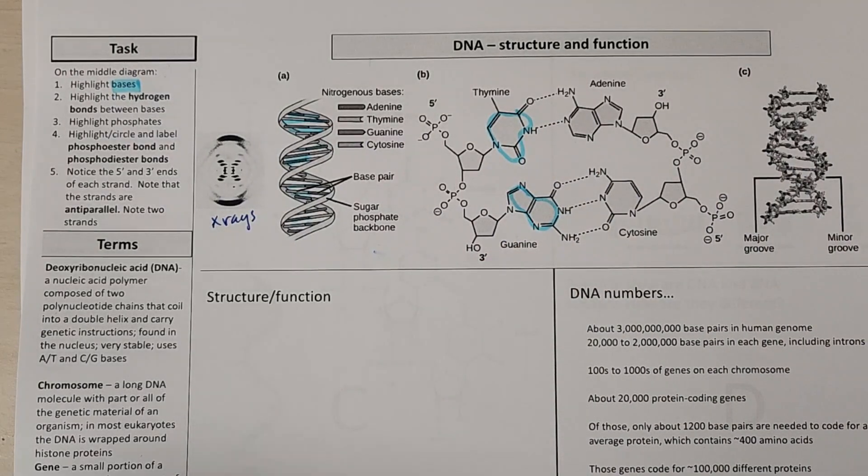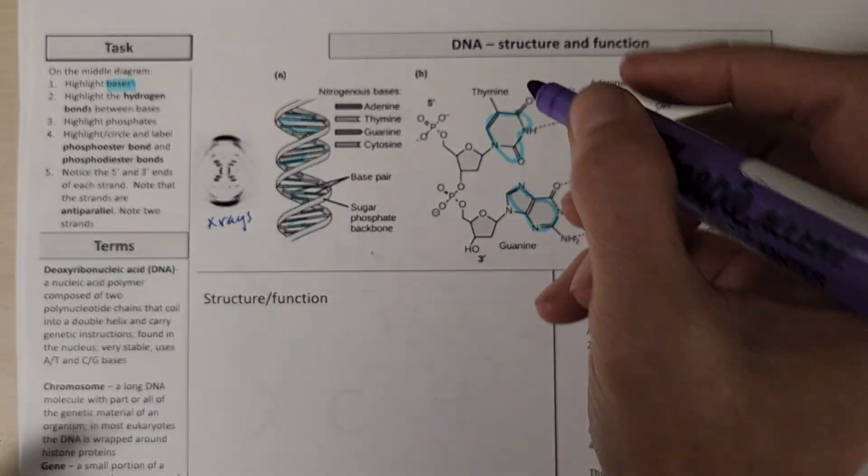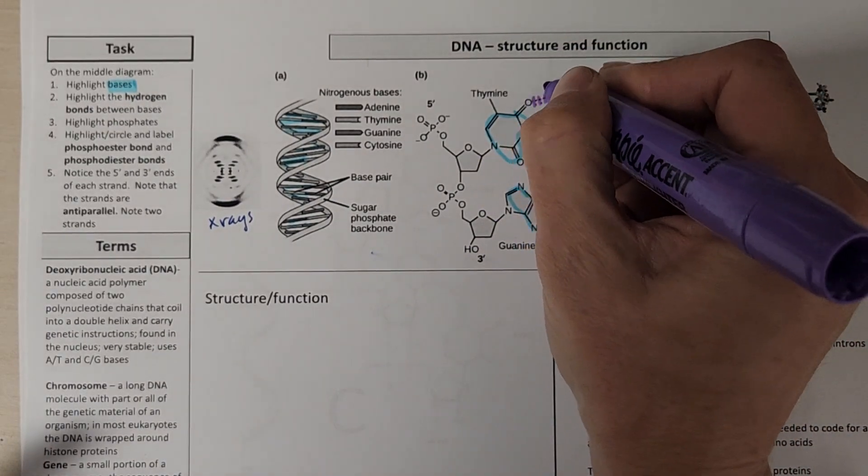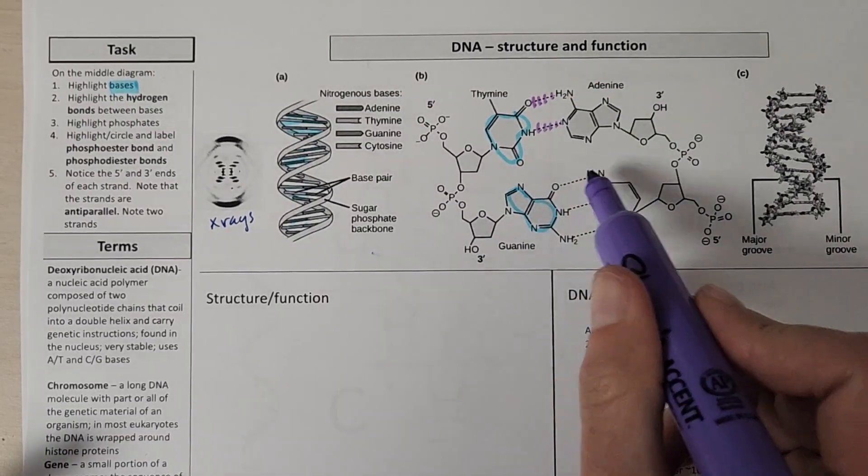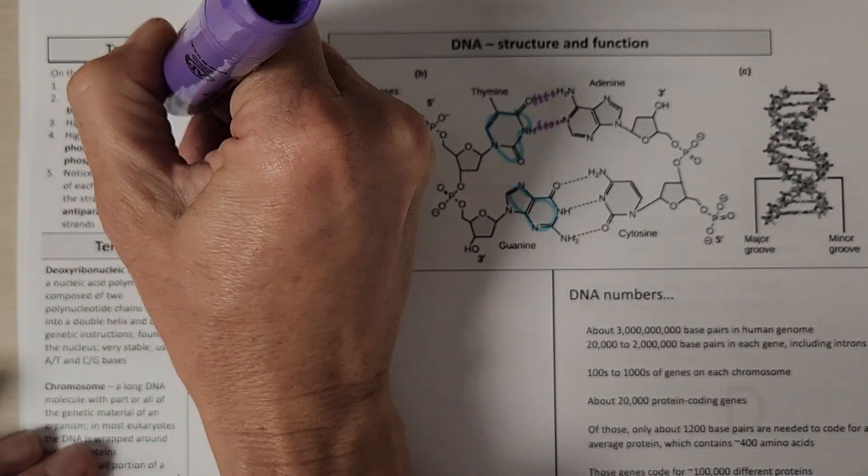We can also highlight the hydrogen bonds in between the bases. So hydrogen bonds are gonna be here and here. And maybe you can find some more down here. Those are my hydrogen bonds.